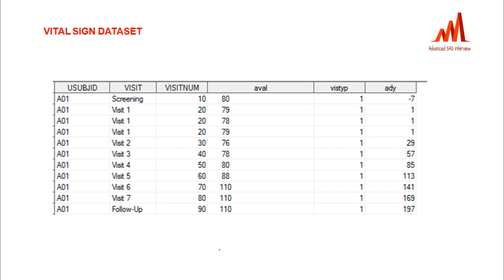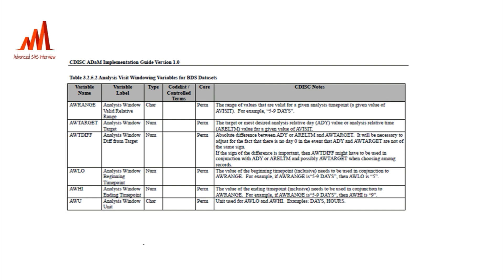This collected visit is not the same as the visit at the ADaM level — most of the time it may vary, sometimes it is equal. When the statistician wants to analyze data visit-wise and the collected visits don't match expected visits, we need to handle the AVISIT and AVISITN variables at the ADaM level. As per the ADaM Implementation Guide version 1.2, these are the variables required to include when handling analysis visit windowing.